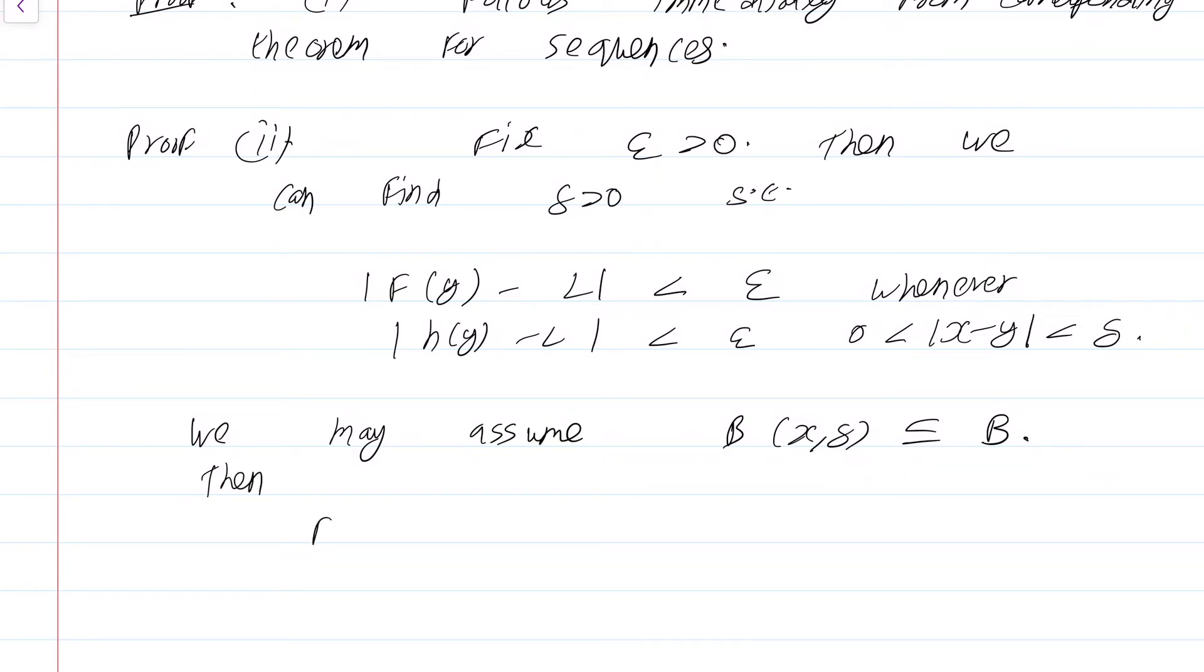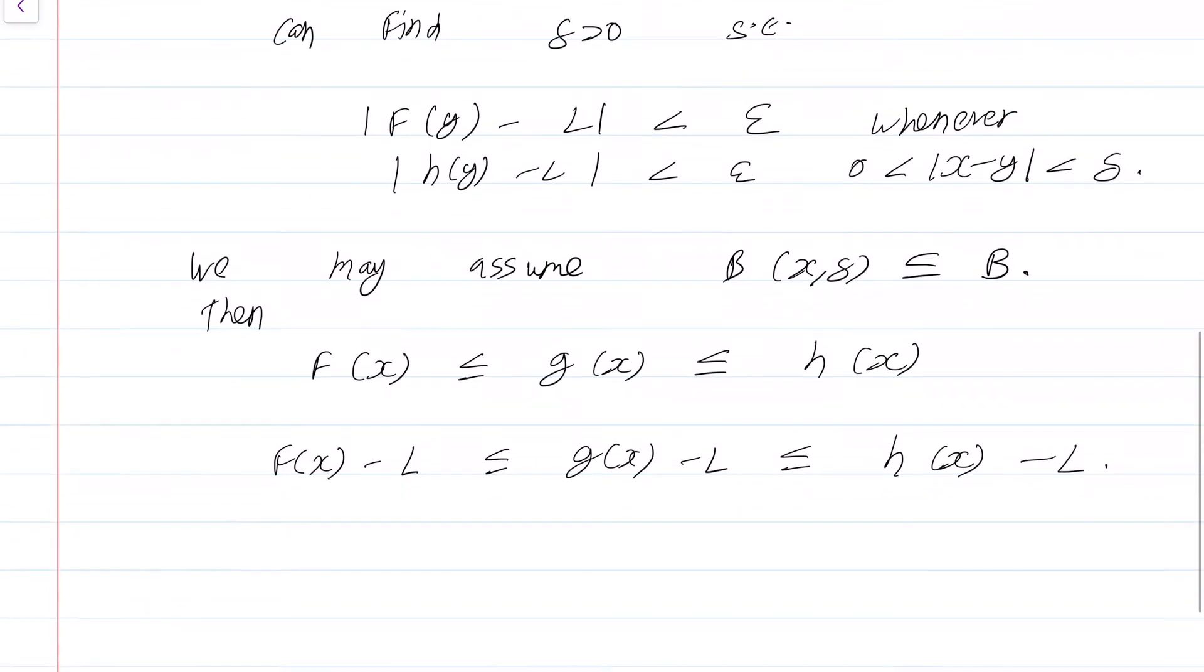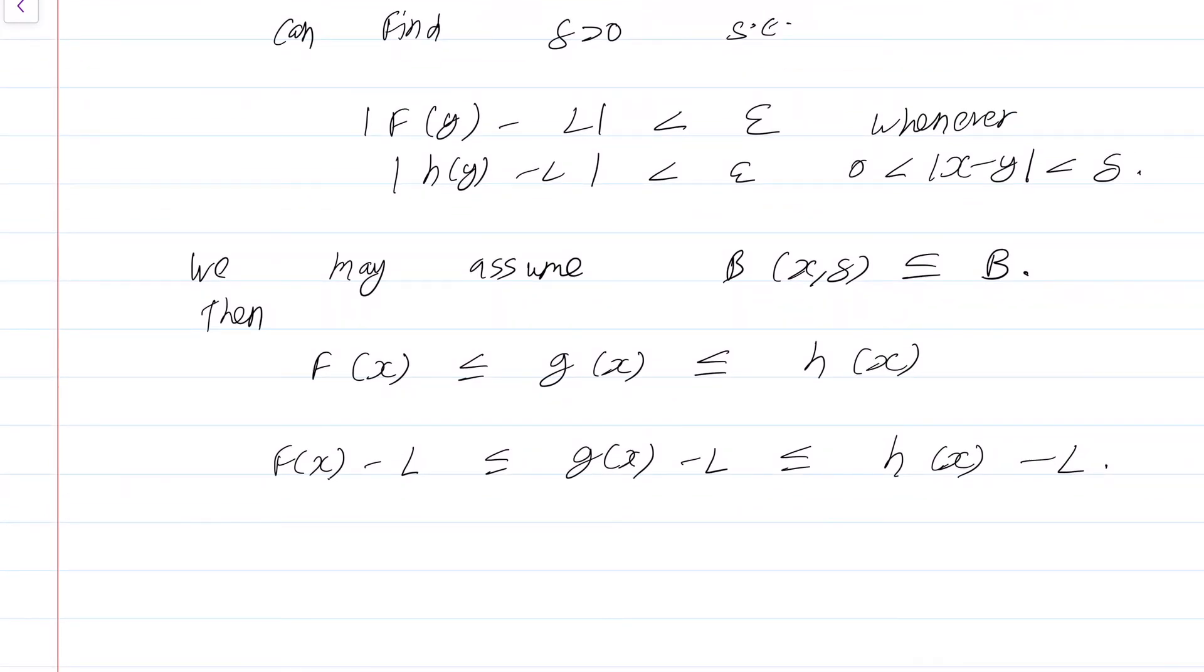Then we know that f(y) ≤ g(y) ≤ h(y). The proof should be very similar to what we did for sequences. We get f(y) - L ≤ g(y) - L ≤ h(y) - L. This just follows by subtracting L throughout the equation.